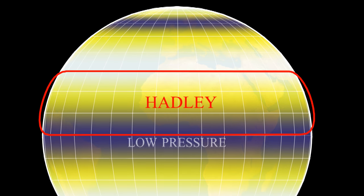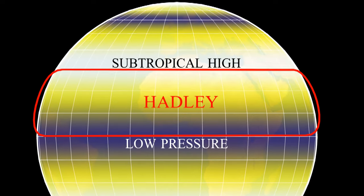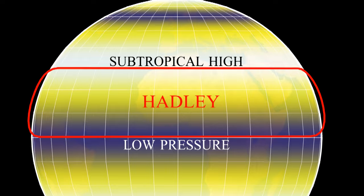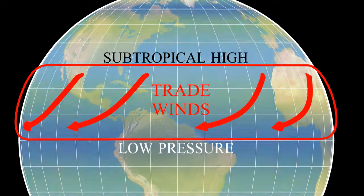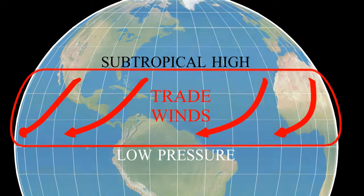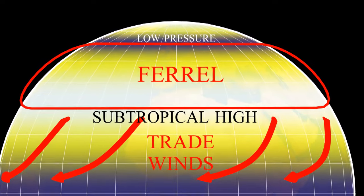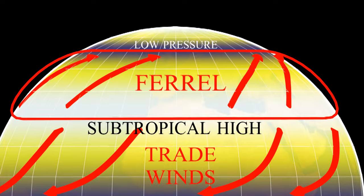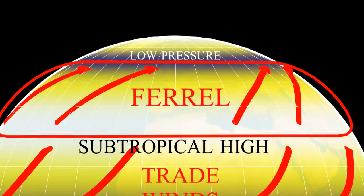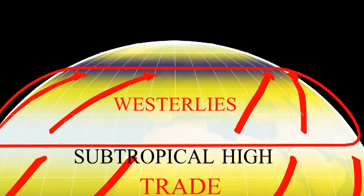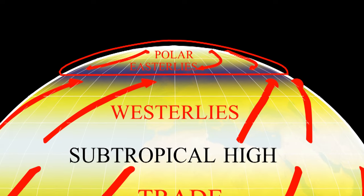The Hadley cell has a low pressure zone to its south and the subtropical high to its north. In order to keep low pressure on the left side of the wind, the wind moves from east to west. These winds are called the trade winds — they're very useful if you want to sail from Europe to America. The Ferrell cell has a low pressure zone to its north, so winds move in the opposite direction, from west to east. These winds are called the westerlies. In the polar cell, the winds move from east to west, so these are called the polar easterlies.